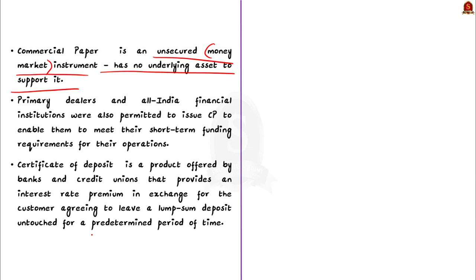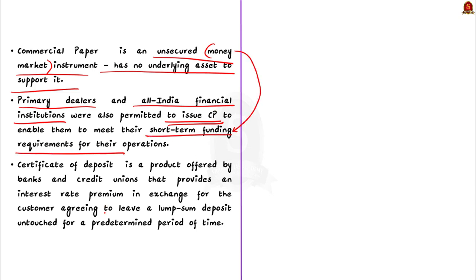Subsequently, primary dealers and all India financial institutions were also permitted to issue commercial papers to meet short-term funding requirements. Corporates, primary dealers and all India financial institutions are currently eligible to issue commercial papers for maturities between a minimum of seven days and a maximum of one year from the date of issue. So statement one is right. The second statement is wrong because the RBI doesn't issue certificates of deposit to banks.